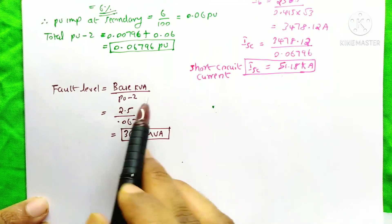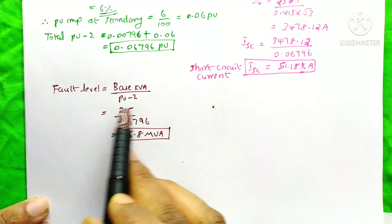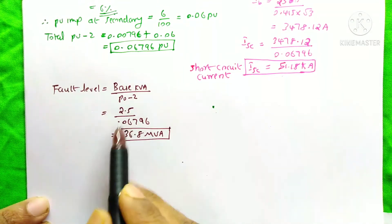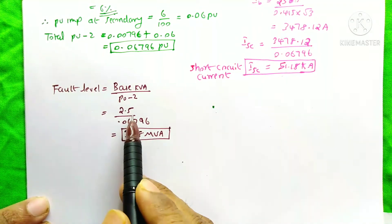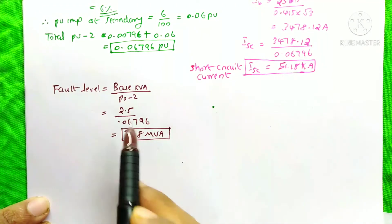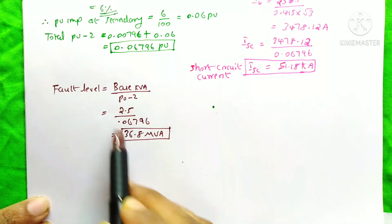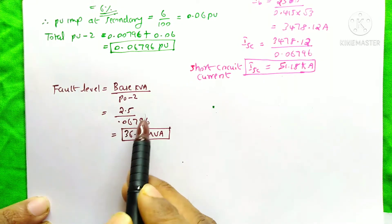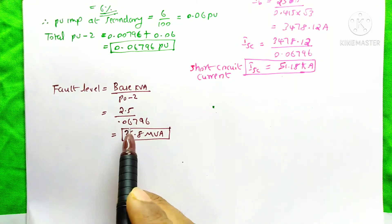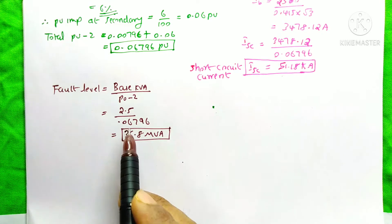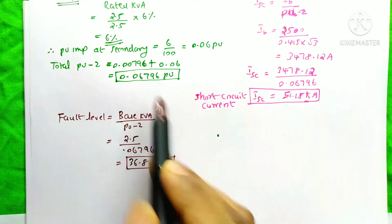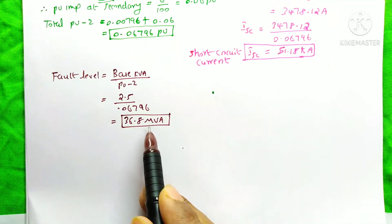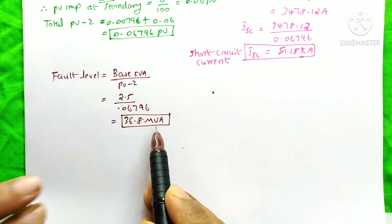The fault level equals base kVA divided by per unit impedance. Base kVA is 2.5 MVA, divided by the total per unit impedance of 0.06796. The answer is 36.8 MVA. This is the fault level at the secondary side of this transformer.